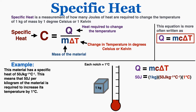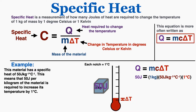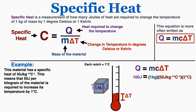A specific heat of 50 joules literally means that if we add 50 joules of energy to 1 kilogram of the material, that results in a temperature change of 1 degree. So if we add 100 joules — twice the amount needed to change the temperature by 1 degree Celsius — that means 100 joules would change the temperature by 2 degrees Celsius. You can see that the math works out on the right.